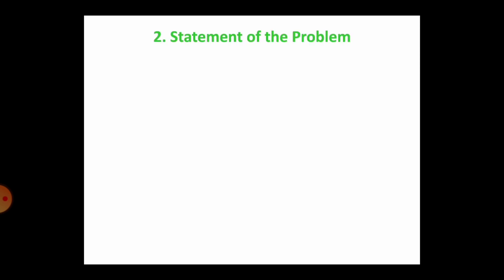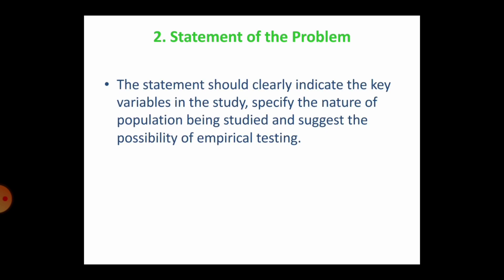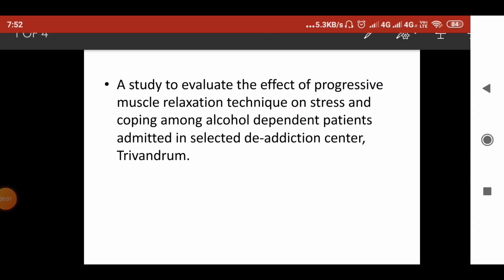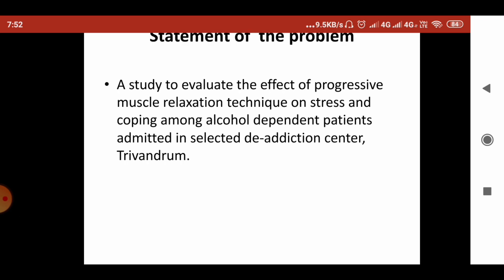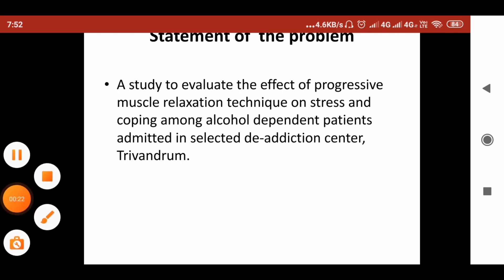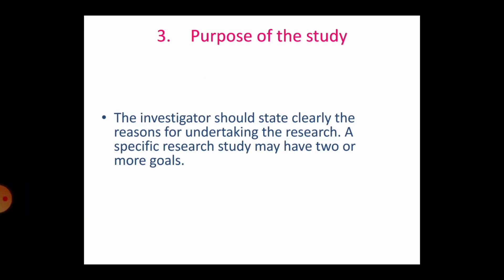The next component is the statement of the problem. The statement should clearly indicate the key variables in the study, specify the nature of the population being studied, and suggest the possibility of empirical testing. For example: 'A study to evaluate the effect of progressive muscle relaxation technique on stress and coping among alcohol dependent patients admitted in selected de-addiction centers.' The investigator should state clearly the reasons for undertaking the research, and a specific research study may have two or more goals.